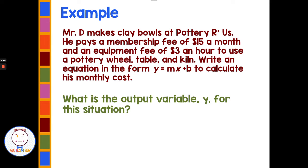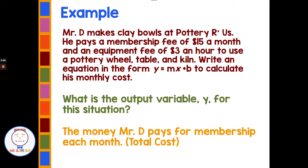What's the output variable, or y? What information are we going to get out of this equation? If we put in the number of hours, what we're going to get out is the money Mr. D pays — the total cost each month.